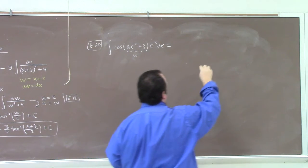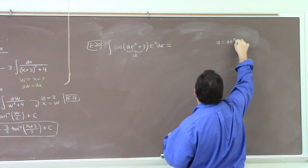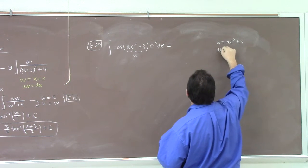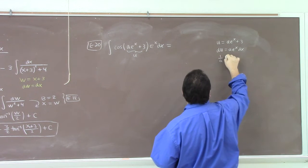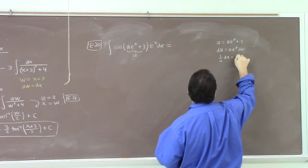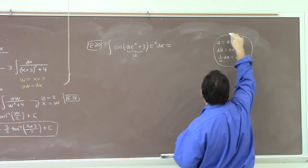Try it, at least. So we'll let u equal to ae to the x plus 3. That gives me du is ae to the x dx, or 1 over a du equals e to the x dx. Of course, I've got an e to the x dx, right? Right here.